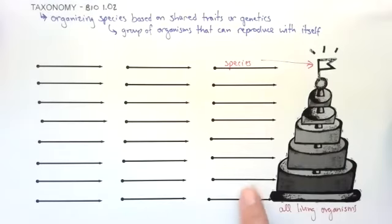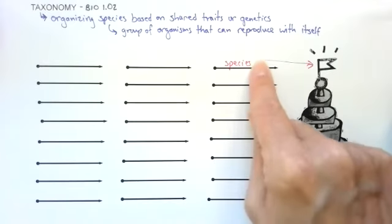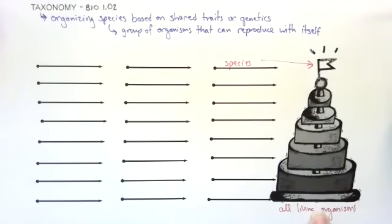So when we get through all of these different layers of the cake, we go from all living organisms down to one single species. There's eight different levels of organization. When we're done, we're going to see that all eight of these help identify a specific species.